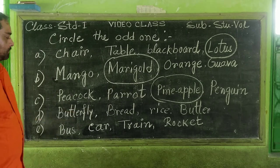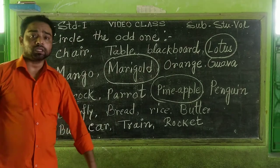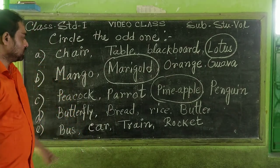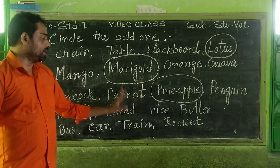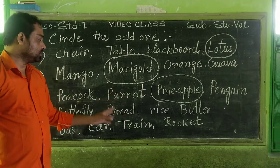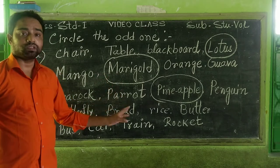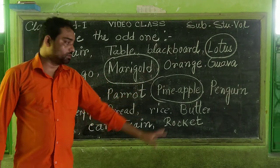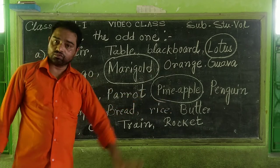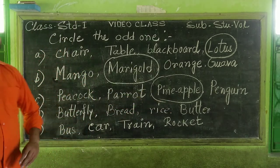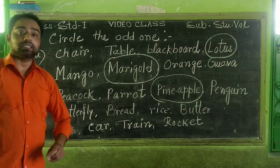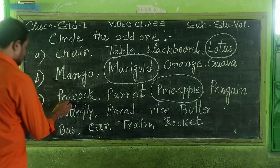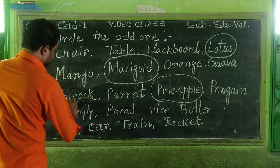Next: butterfly — it is an insect. Bread, rice, butter — these are food items. But butterfly is an insect, it does not belong with the food items. So the odd one out: Satyala Orba is butterfly.